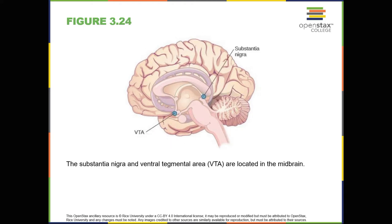Midbrain and hindbrain structures. The midbrain is comprised of structures located deep within the brain, between the forebrain and the hindbrain. The reticular formation is centered in the midbrain, but it actually extends up into the forebrain and down into the hindbrain. The reticular formation is important in regulating the sleep-wake cycle, arousal, alertness, and motor activity. The substantia nigra (Latin for black substance) and the ventral tegmental area (the VTA) are also located in the midbrain, as shown in figure 3.24.